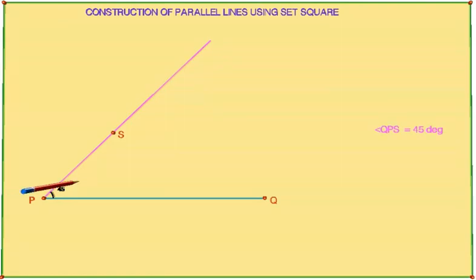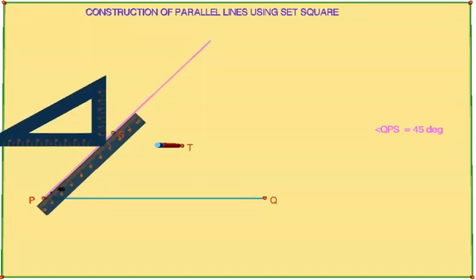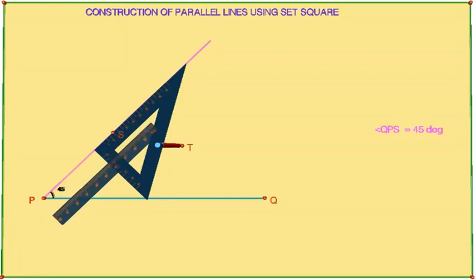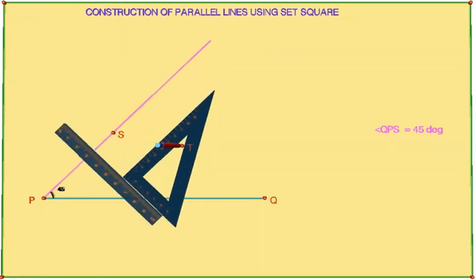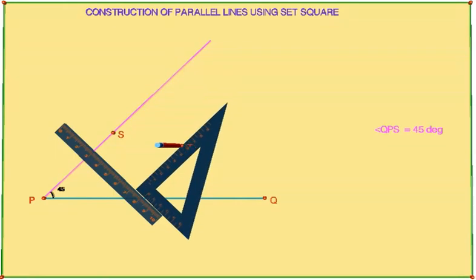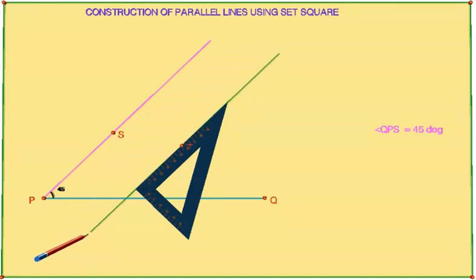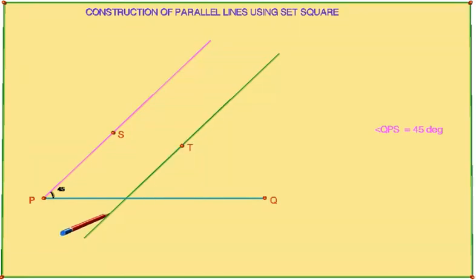Now locate another point T in the plane through which we want to draw a parallel line to PS. Again take the set square and keep the perpendicular edge on PS and keep the ruler on the other perpendicular edge. Move the set square along the edge of the ruler till it reaches point T and draw a line through point T at the edge of the set square which intersects PQ line at U.